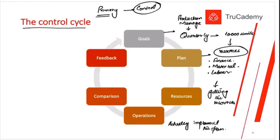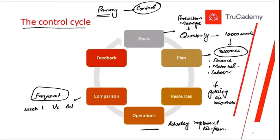Implementing the plan is what we call operations. Whatever resources and plan we have, we start executing: making schedules, giving supervisors daily, hourly, or weekly production targets. Once we have actual data, we do frequent comparisons — for example on a weekly basis. If the quarterly goal requires 800 units in week one but we only produced 600, that's a difference of 200 units.